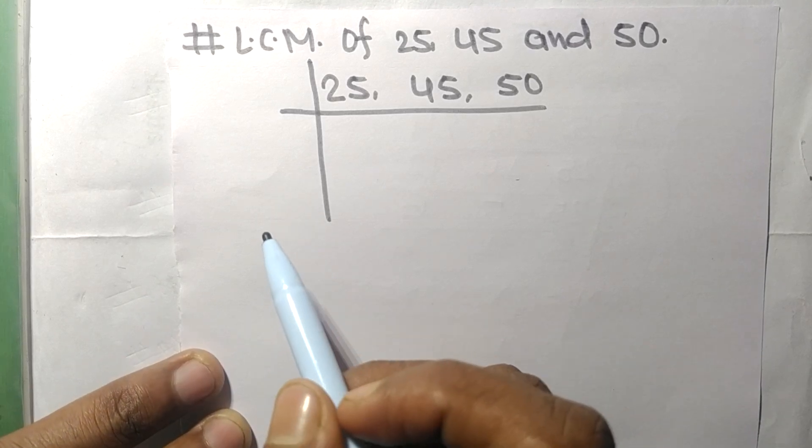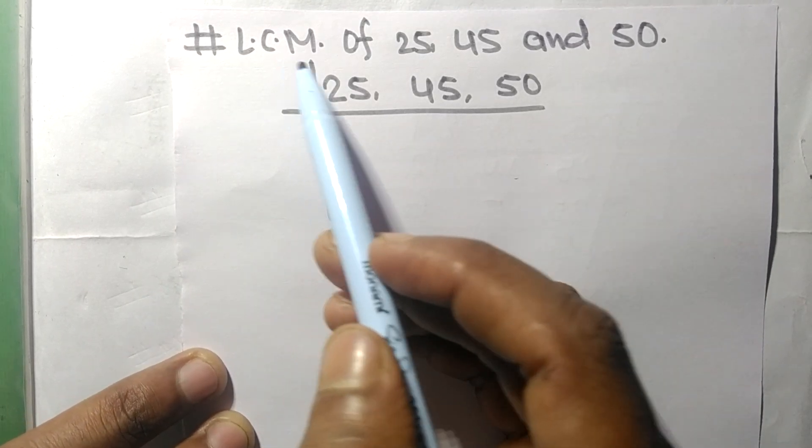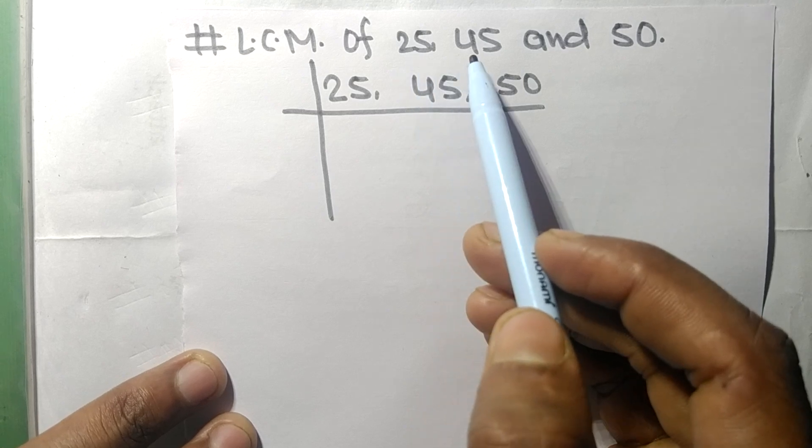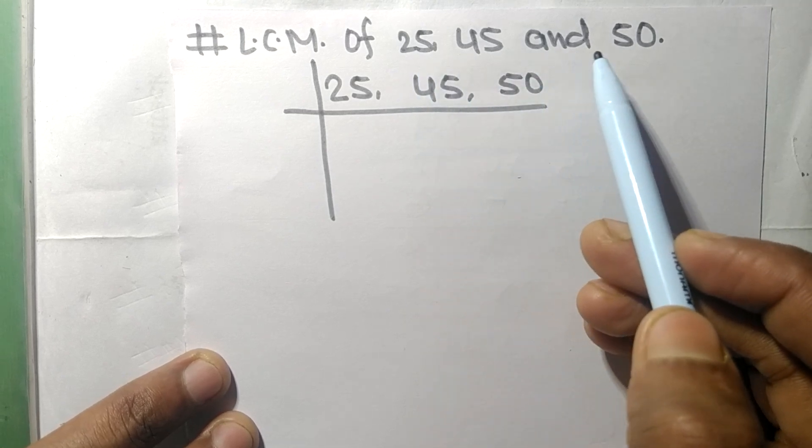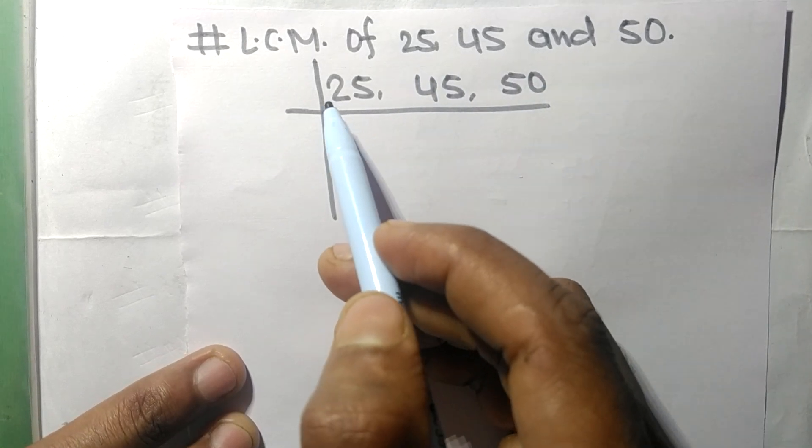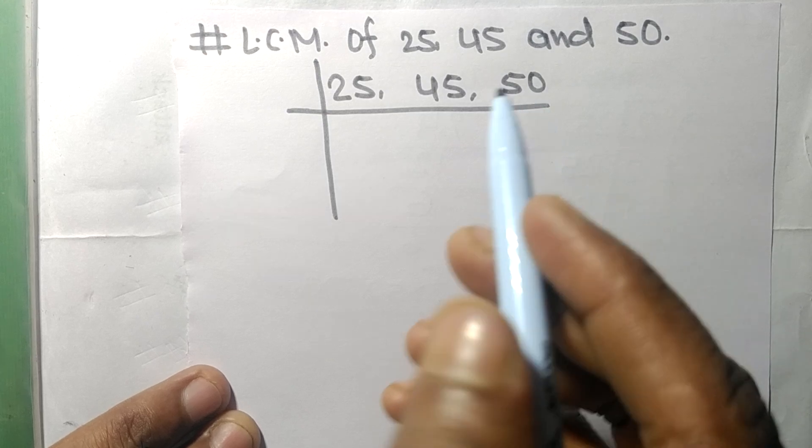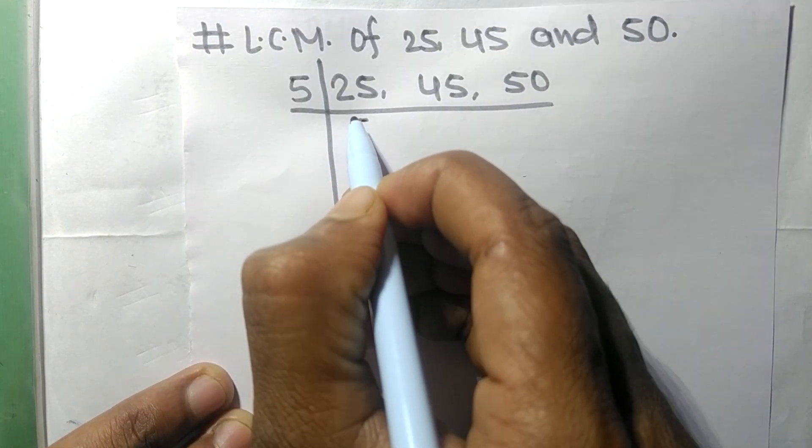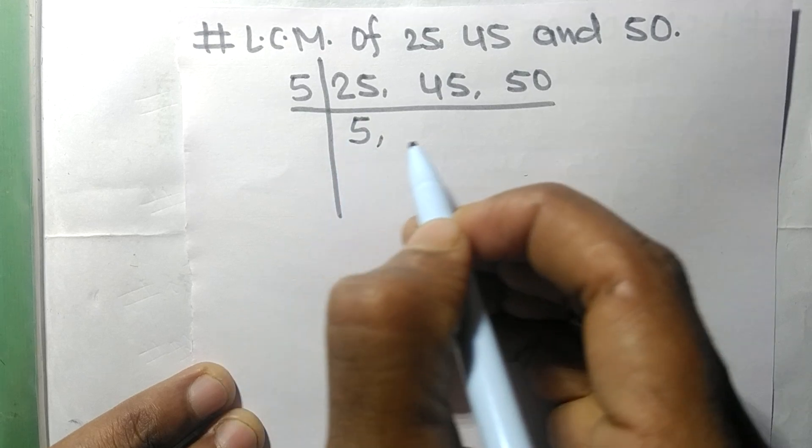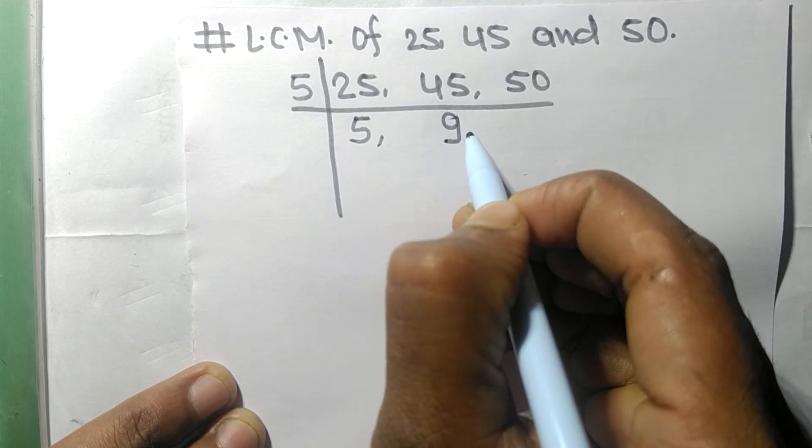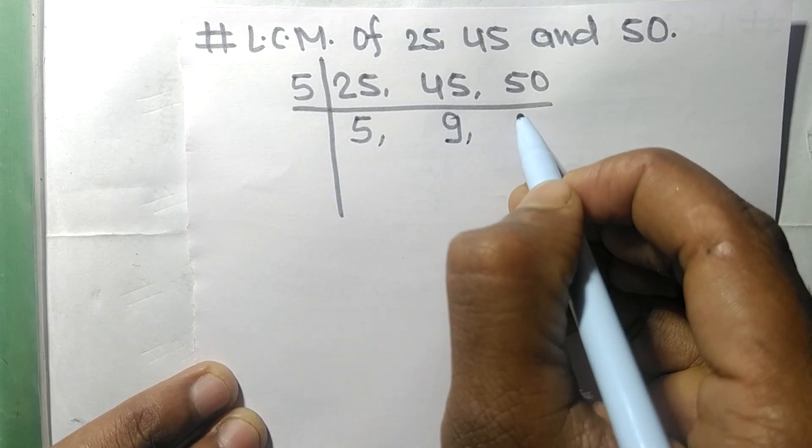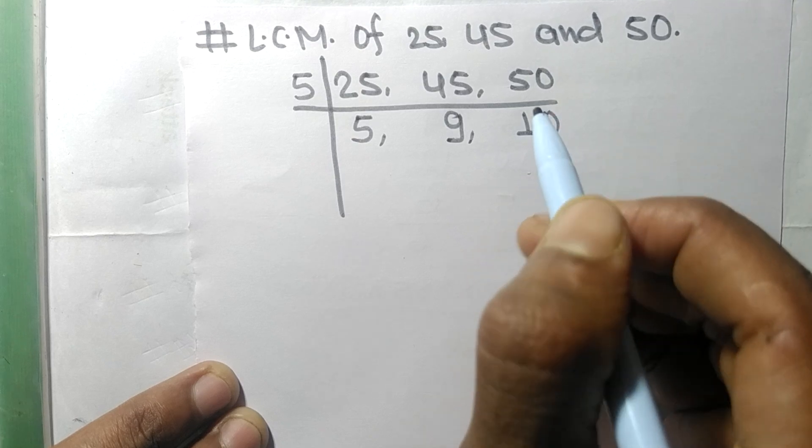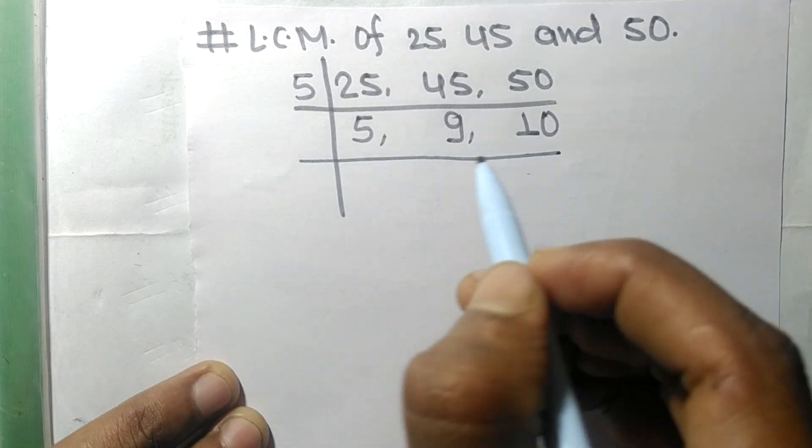So today in this video we shall find the LCM of 25, 45, and 50. These all numbers are divisible by 5: 5 times 5 means 25, 5 times 9 means 45, 5 times 10 means 50, like this.